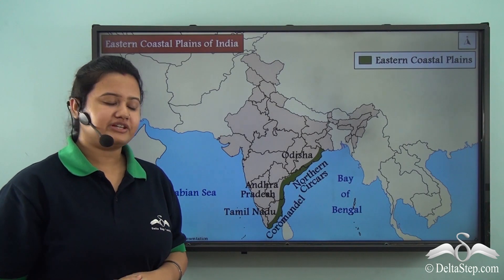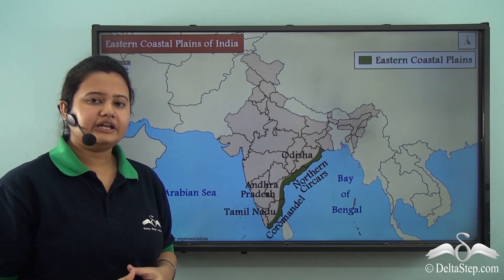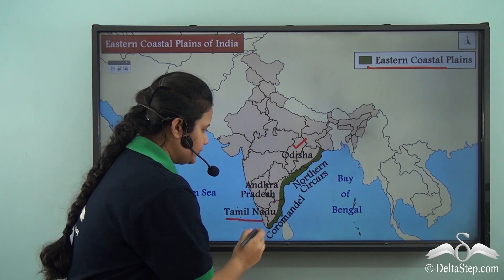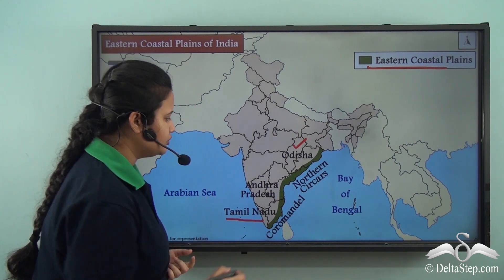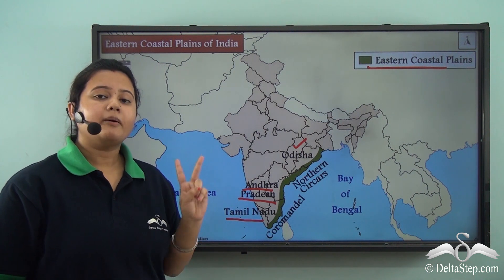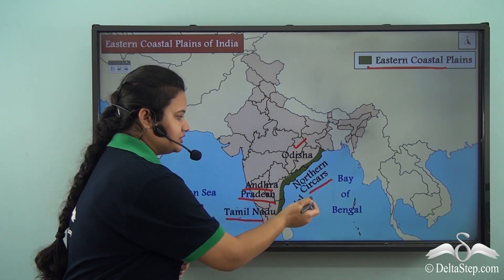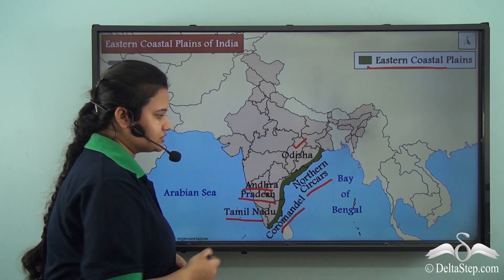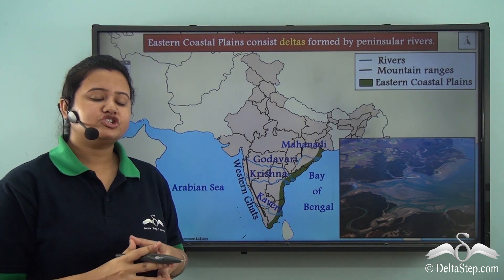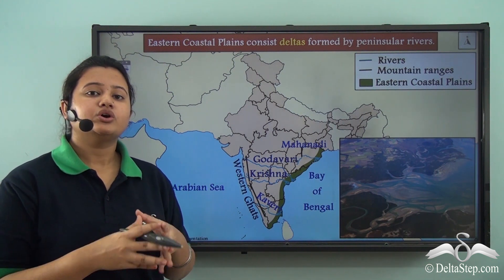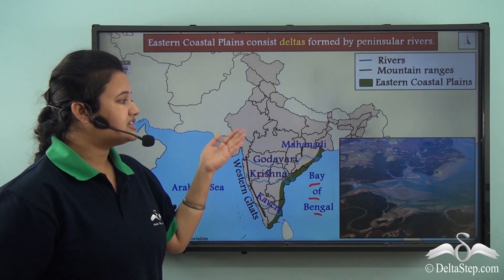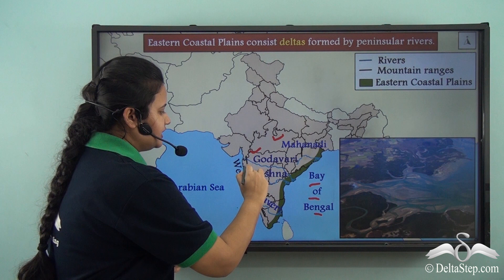At the eastern margin of peninsular India we have the eastern coastal plains. The eastern coastal plain stretches from Orissa to Tamil Nadu and also comprises a small portion of Andhra Pradesh. The eastern coastal plain can be further divided into two parts: the northern part is known as Northern Sirkas and the southern part is known as Coromandal Coast. A number of peninsular rivers originate from the Western Ghats and flow eastwards to join the Bay of Bengal — some of these rivers are Mahanadi, Godavari, Krishna, and Kaveri.